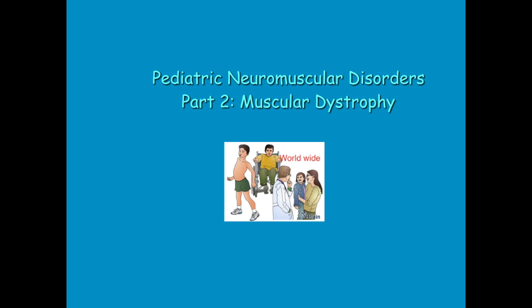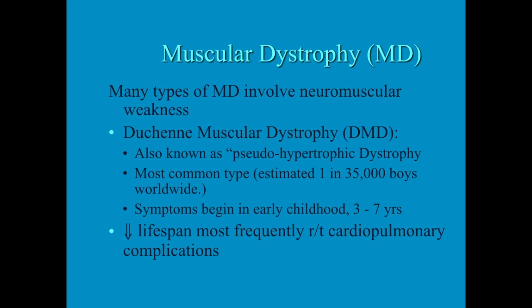This is part two in the series about neuromuscular disorders and this one will address muscular dystrophy. There are about five or six types of muscular dystrophy and the most common form is the Duchenne type, also known as the pseudo-hypertrophic dystrophy. It is the most common worldwide, affecting one in 35,000 males.